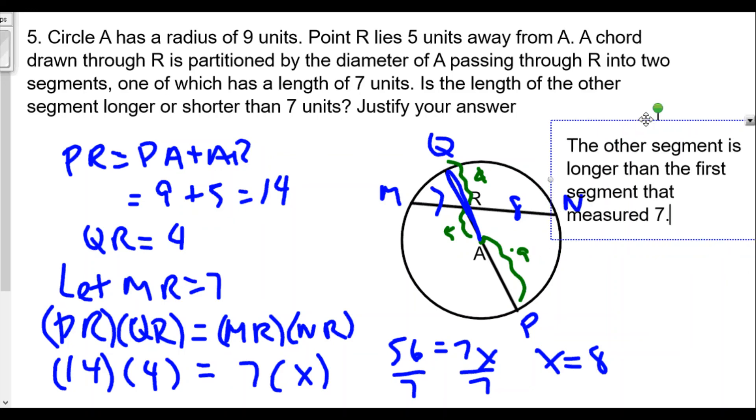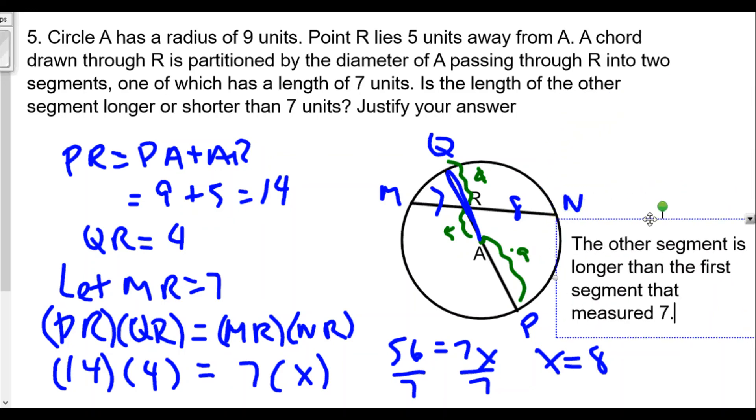We figured this out because we looked at the relationship between the chords. When two chords intersect, the product of the parts of the first chord must equal the product of the parts of the second chord. We were able to find PR by adding PA plus AR, knowing they both lie on the diameter. We add the pieces together to get 9 plus 5 equals 14, and the remaining part QR had to be four. So we end up getting 56 equals 7x, and x equals eight, which is longer than the other piece.